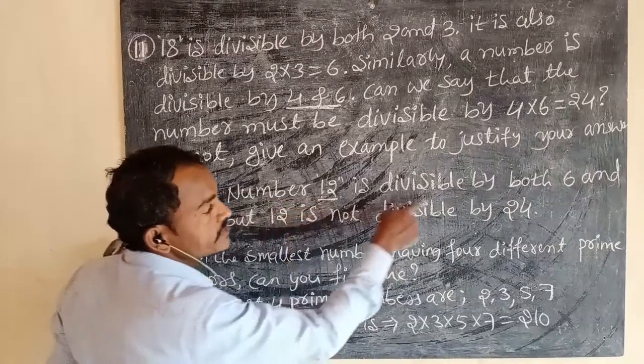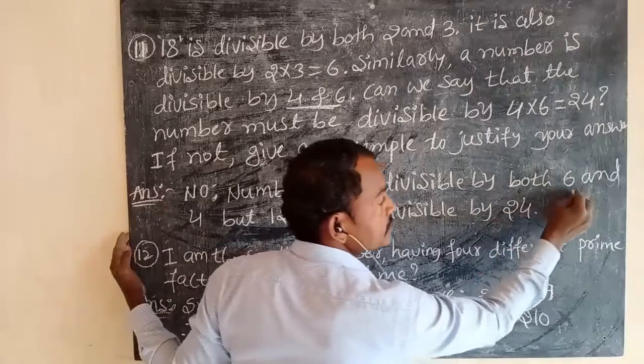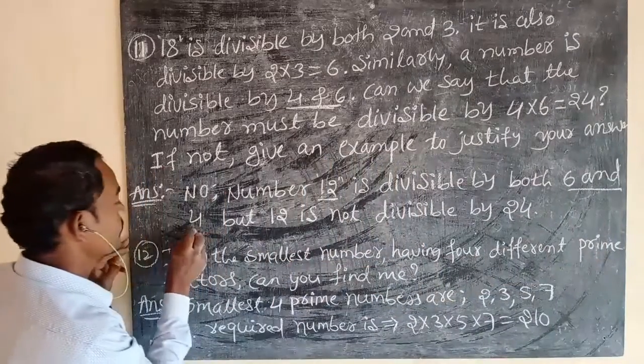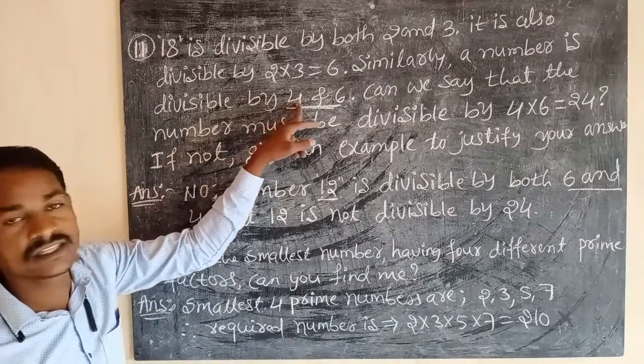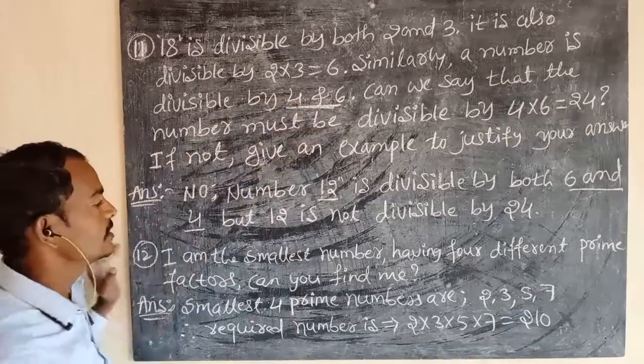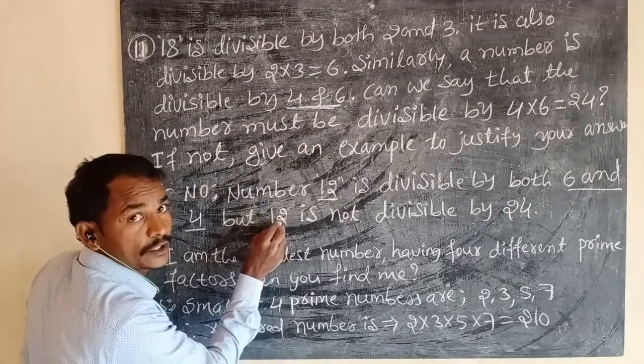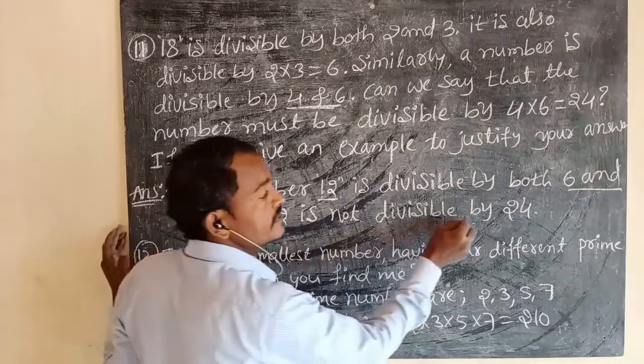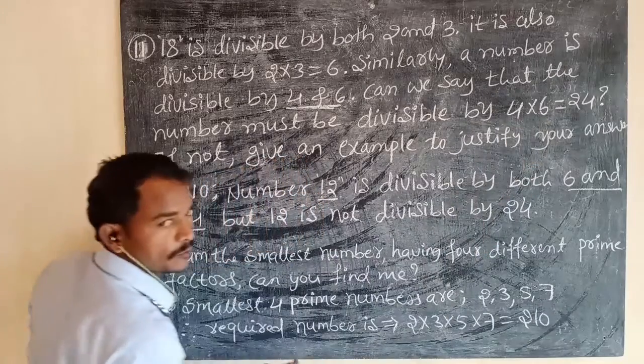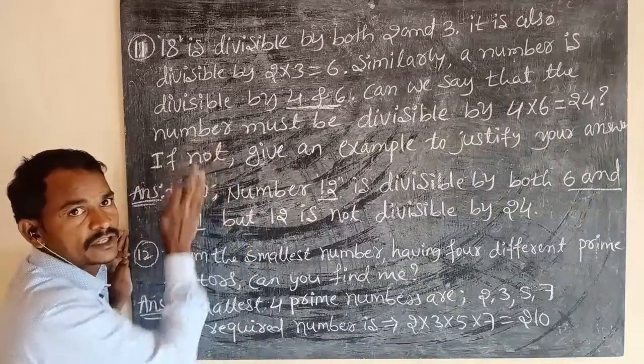Because number 12 is divisible by both 6 and 4, but 12 is not divisible by 24. So, this is the answer for this question.